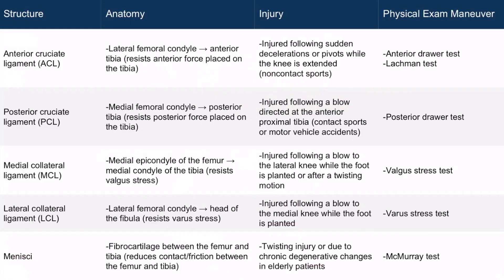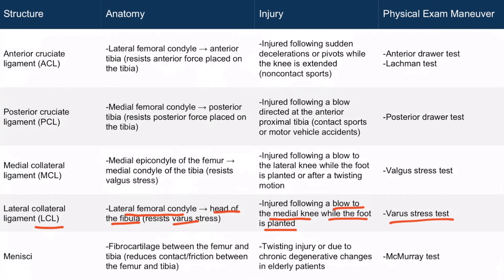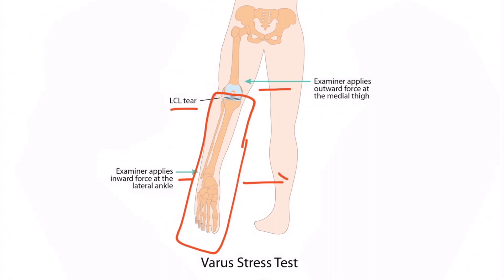The lateral collateral ligament, or LCL, runs from the lateral femoral condyle to the head of the fibula and resists varus stress. Varus stress means that force is applied at the knee from the medial direction. The LCL is often injured following a blow to the medial knee while the foot is planted. The exam maneuver used to identify an LCL injury is the varus stress test. The examiner places one hand on the medial thigh and applies an outward force, simultaneously applying an inward force at the lateral ankle. If the LCL is torn, the lower leg will adduct more than expected.